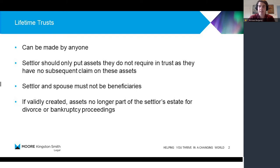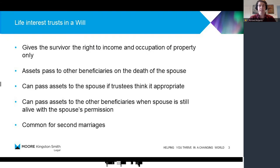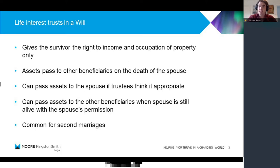That's a lifetime discretionary trust. The other trust I'd like to briefly discuss is a life interest trust in a will. These give the beneficiary quite significantly more right to assets and property, in that they are entitled to the income generated by the assets as well as the right to occupy any property. And the reason this is a particularly popular type of trust at the moment is it's used primarily for second marriages with children from the first marriage.